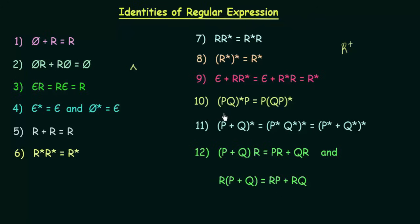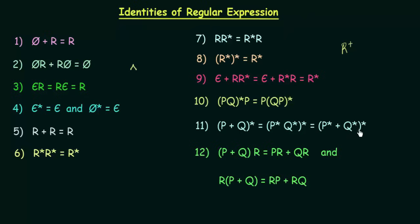The tenth identity says (p·q)*·p = p·(q·p)*. This is something you just have to remember. The eleventh identity says (p + q)* = (p*·q*)* = (p* ∪ q*)*, which you also just have to remember.